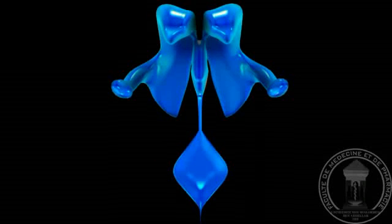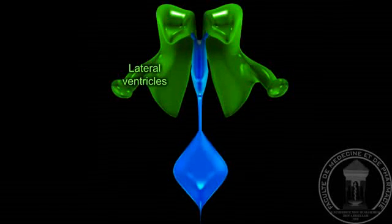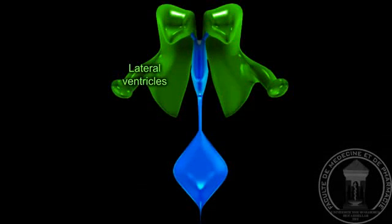There are two lateral ventricles occupying the center of the cerebral hemispheres. Both are connected to the third ventricle, at the center of the diencephalon, through the foramen of Monroe.